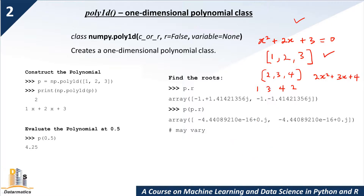If you are given [1, 3, 4, 2], the lowest factor is x to the power of zero and the highest is x to the power of three. So you would have x cubed plus 3x squared plus 4x plus 2 equal to zero. This is how it goes.